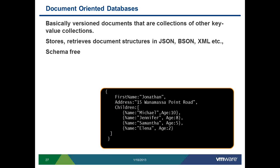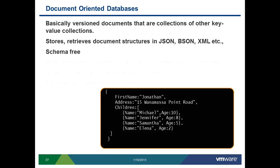The next one is document-oriented databases. The documents are versioned documents — they are stored against a key, and we can retrieve and store these documents in multiple formats like JSON, BSON, or XML. Some SQL databases classify XML formats and NoSQL stores separately, but most NoSQL stores support JSON. Document-oriented databases are also schema-free.